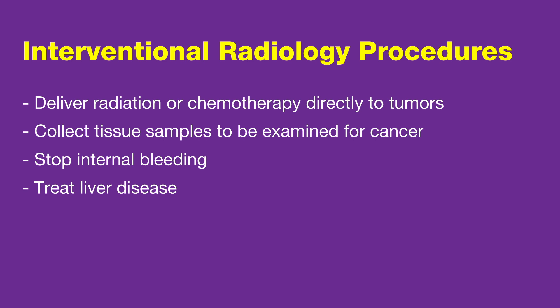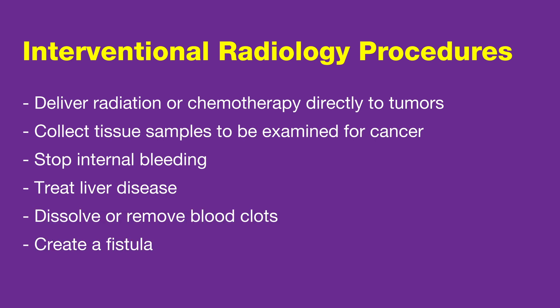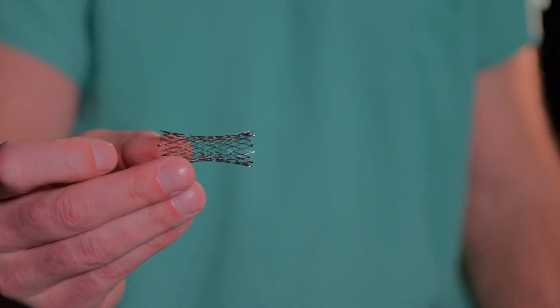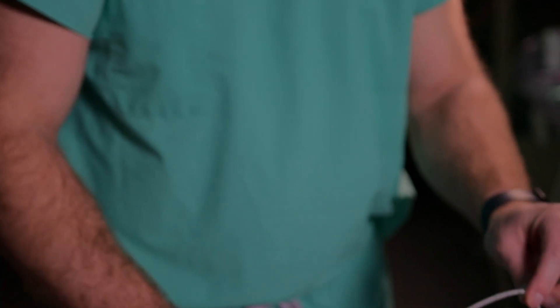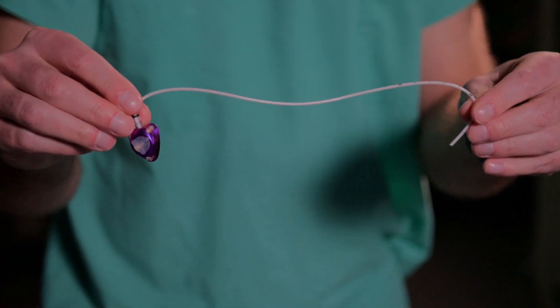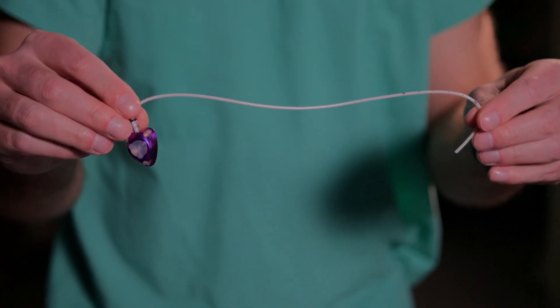Other reasons include to stop internal bleeding, to treat liver disease, to dissolve or remove blood clots, to create something called a fistula which creates wider stronger veins for patients who are on dialysis, to treat uterine fibroids avoiding the need for a hysterectomy. We also place stents like this to open blocked or narrowed blood vessels or ducts, and place devices such as chemo ports to allow easier access for medications to be delivered or blood to be drawn.